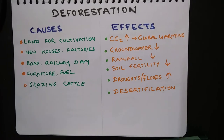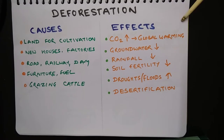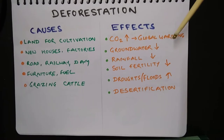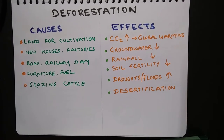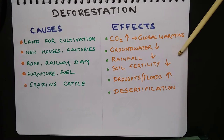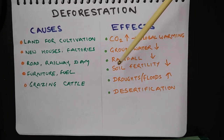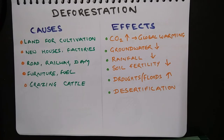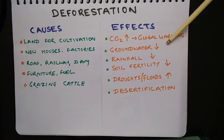The effects of deforestation: deforestation results in an increase in the level of carbon dioxide in the atmosphere, which leads to global warming. It also results in reduction in groundwater, leading to a reduction in the water table, as well as reduction in rainfall and soil fertility. Deforestation results in increased instances of droughts and floods, and in some cases may lead to desertification — the process of conversion of green area into desert.